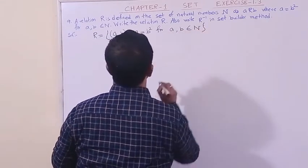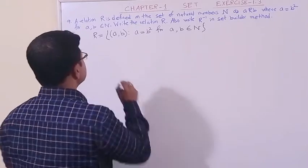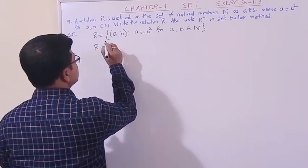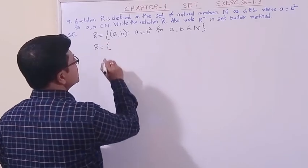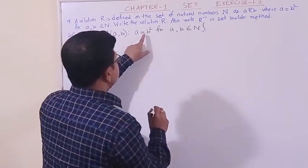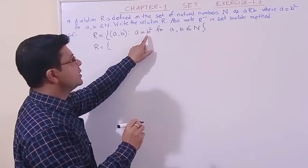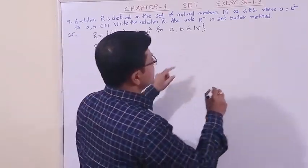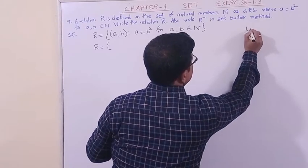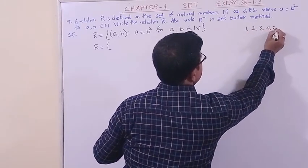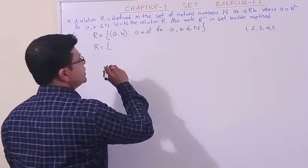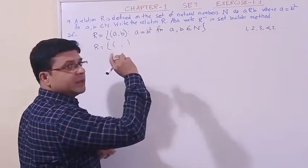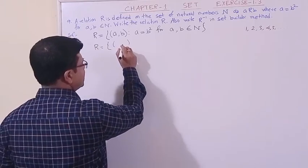So in tabular method, since a equals b squared, and all are natural numbers, natural numbers start from 1, 2, 3, 4, 5 like this. Let us make the ordered pairs. Let us fill up the second component first. If the second component is one...